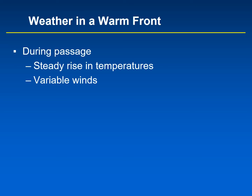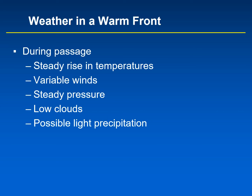Pressure is steady during passage of a warm front. There are low clouds like stratus and there can be light precipitation, although some warm fronts actually don't have precipitation right along them — they may have precipitation ahead of them, but some warm fronts are only associated with clouds. So as the warm front is passing, you may see some clouds but might not experience any rain. There are steady dew points associated with the passage of a warm front. After the warm front passes, winds are south or southwest — so before a warm front, winds are from the east or southeast, and after it passes they've shifted to the south or southwest. Temperatures are warmer.